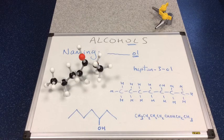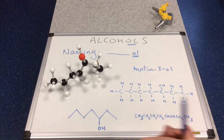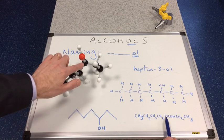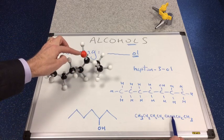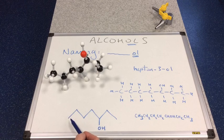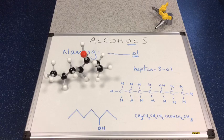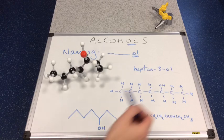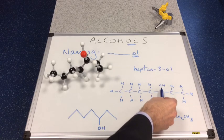Here are the various formulae. The structural formula is: CH₃, CH₂, CH₂, CH₂, CH(OH), CH₂, CH₃. For the skeletal formula, there are 7 carbons in the chain and the OH hydroxyl group is on carbon number 3, so I've put it there — making sure the oxygen is connected to the carbon. In the displayed formula, the oxygen is directly linked to that carbon.